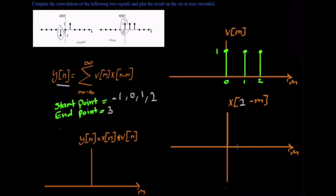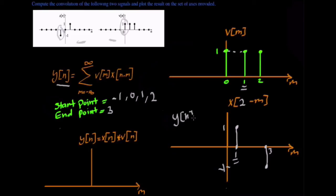The next point is two. For x of two minus m, the new points will be at point one with an amplitude of one, and at point three with an amplitude of negative one. We see if there is an overlap — we see only one overlap, at point one. Both functions have an amplitude of one. So we multiply those together to get y of n, which in this case will be one times one equal to one.